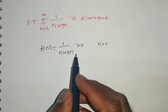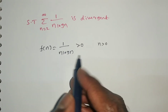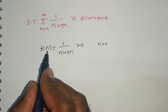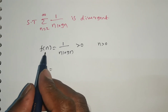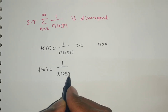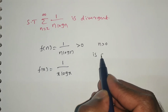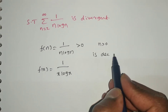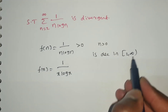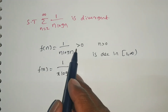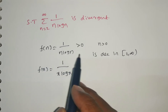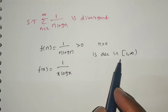And as n increases, f of n decreases. If we consider f of n as f of x — that is, replacing n by x — it becomes f of x equal to 1 by x log x. This series is a decreasing series as n increases, decreasing from 2 to infinite. So the given series is a non-negative decreasing function on the interval 2 to infinite.